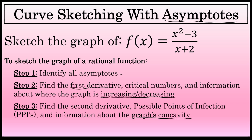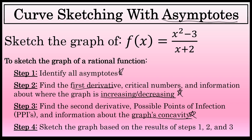Once you've identified the asymptotes, intervals where the function is increasing and decreasing, and intervals of concavity, you have enough information to sketch the graph. Step four is sketching the graph based on the results of steps one, two, and three. We'll now perform those four steps to draw the graph of f of x equals x squared minus 3 over x plus 2.